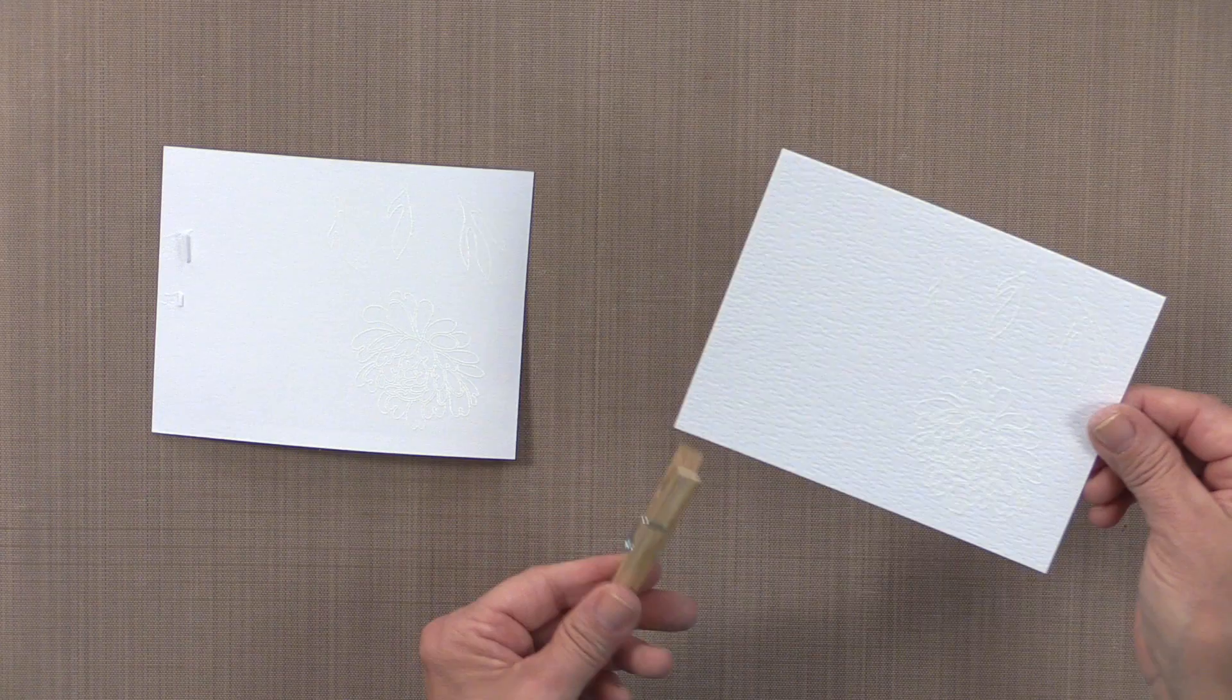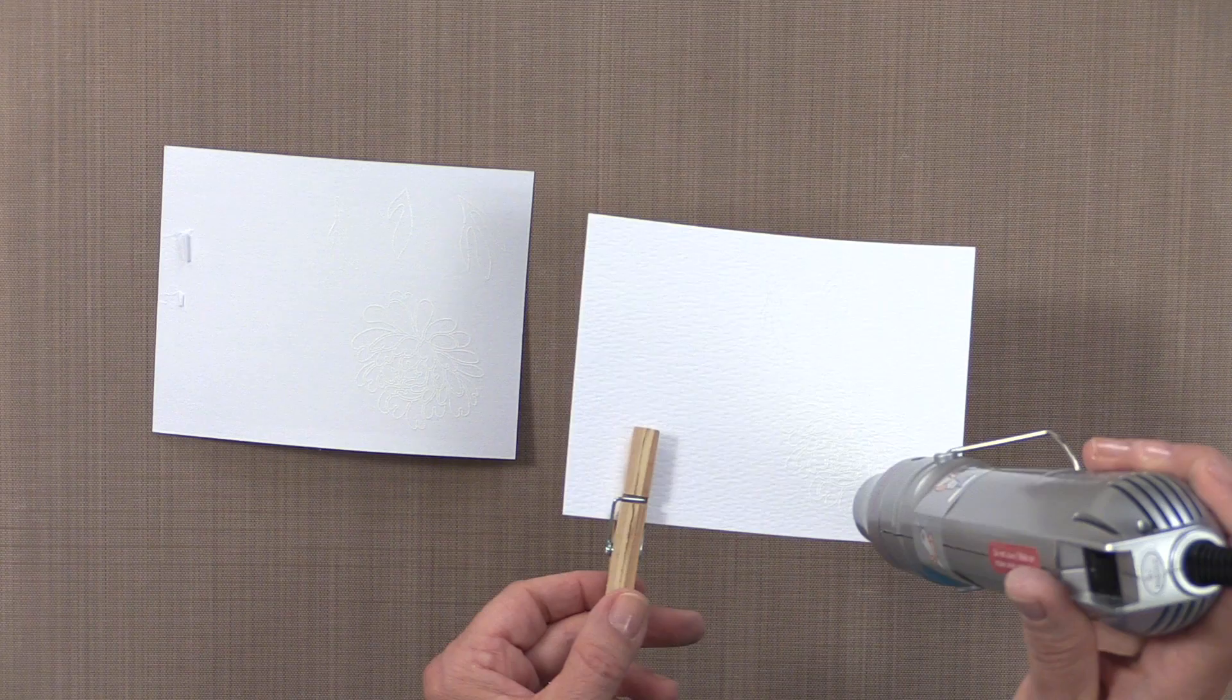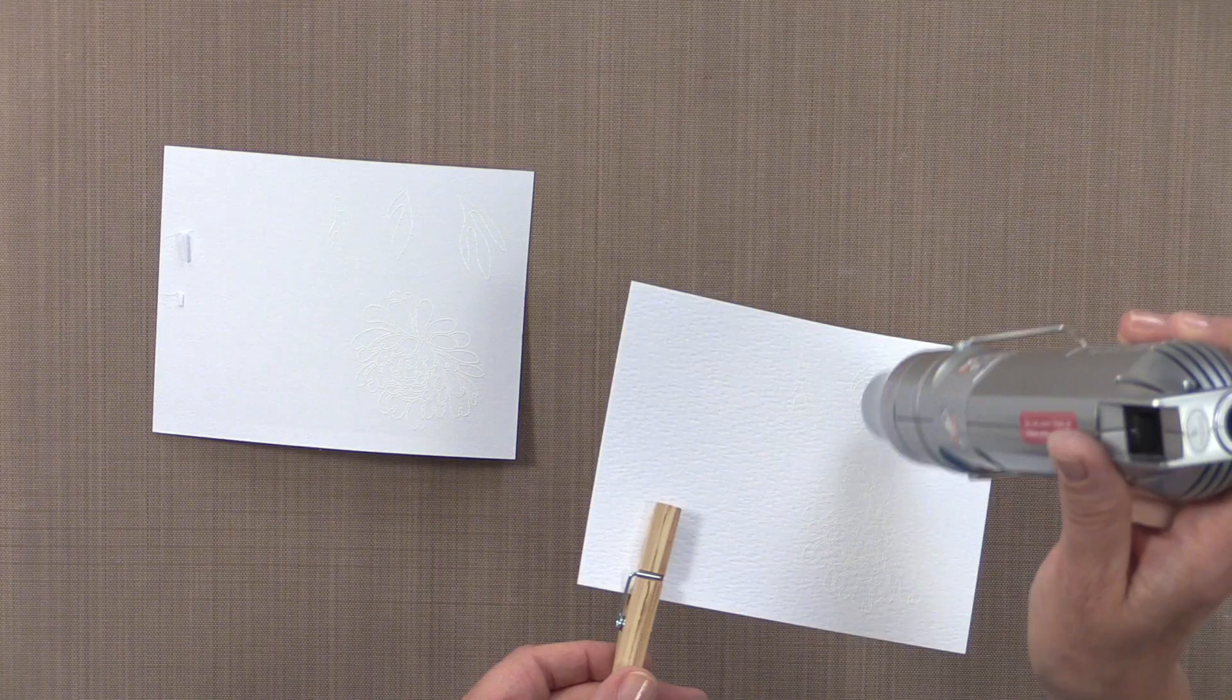So now I'm going to do the other piece as well, and doing the same thing. That heat gun is now very, very hot, and it's going to emboss very, very quickly. But once again, if it does warp, I can always go to the back of the cardstock and heat it a little bit, and it will start to lay flat again.